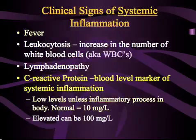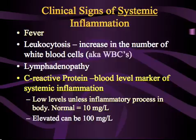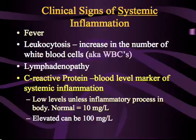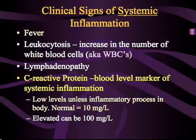When an event leads to more than a localized acute inflammatory event, we call it systemic inflammation. The clinical signs of systemic inflammation are fever, leukocytosis — or an increase in the number of white blood cells — lymphadenopathy, and an increase in C-reactive protein. C-reactive protein is a blood level marker of systemic inflammation. Normal levels average about 10 mg per liter, while elevated levels can be as high as 100 mg per liter.